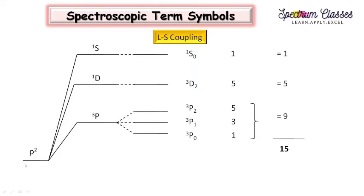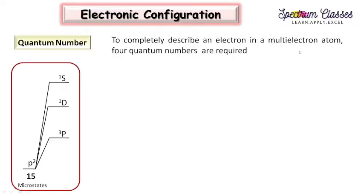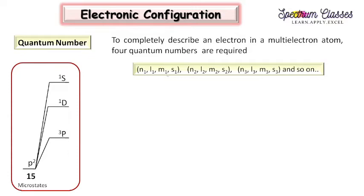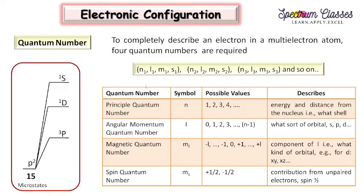First I will bring to your notice: if we are having electronic configuration, what is the need for this type of term symbol? Why have we elaborated all such terms? In the electronic configuration, four quantum numbers are required to completely describe a given electron in a multi-electron atom. So for example, n, l, m and s - this set of quantum numbers is required to define the position of an electron in a multi-electron atom. What is n? It is known as principal quantum number and it has values 1, 2 and so on.